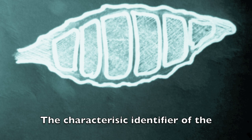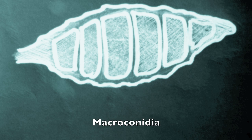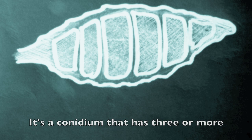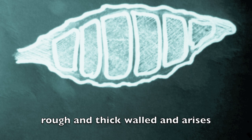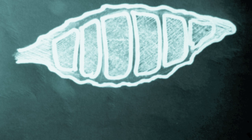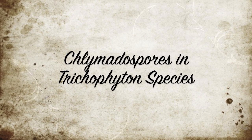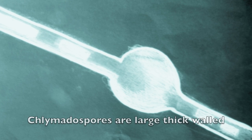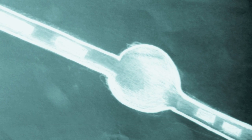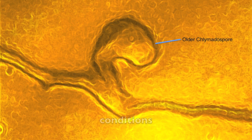The characteristic identifier of the Microsporum species is the macroconidium. It is a conidium that has three or more nuclei. It occurs in large numbers and is large, rough, and thick-walled, arising from the ends of undifferentiated hyphae. Chlamydospores are large, thick-walled resting spores that are able to survive in the toughest, most unfavourable conditions.